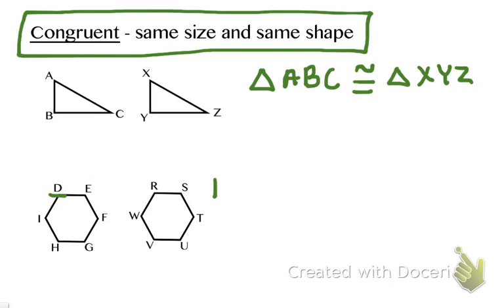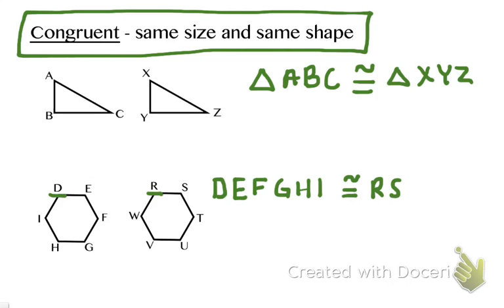I can say that hexagon DEFGHI is congruent to — and I want to make sure I start in the same position and follow the same pattern — RSTUVW. And there's my congruence statement about those hexagons.